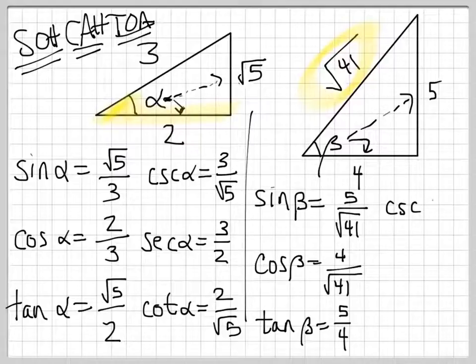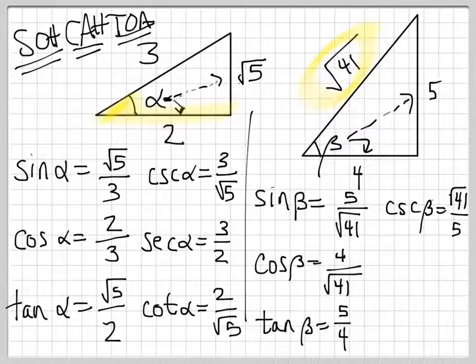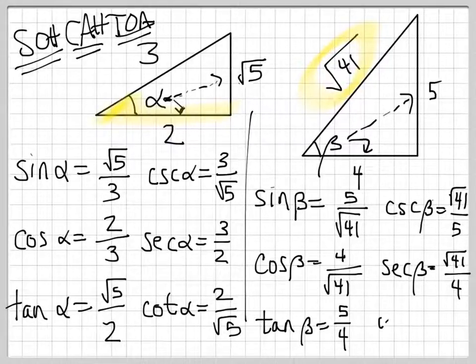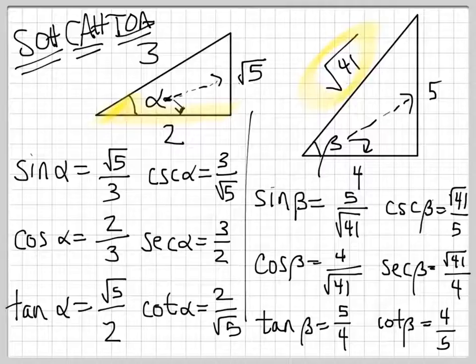Just filling in the rest of this, we get radical 41 over 5. Secant is radical 41 over 4, and cotangent is 4 fifths. Okay, so if you have the sides and you have all of their sizes, then you can figure out the trig values for all of the corresponding angles. It has nothing to do with the unit triangle at this point, or the unit circle at this point. It's 100% about the triangle that's in front of you.